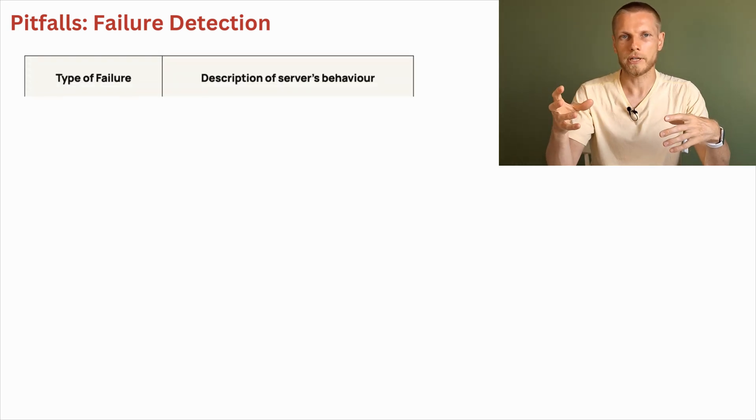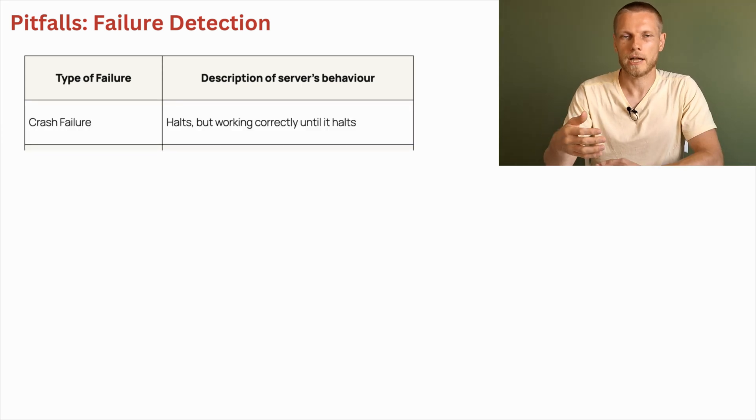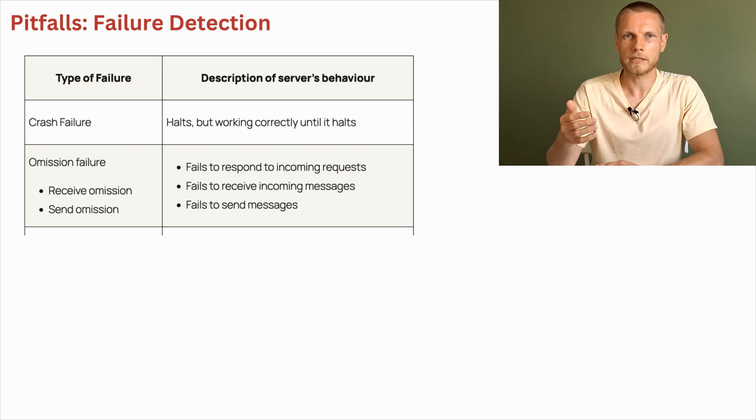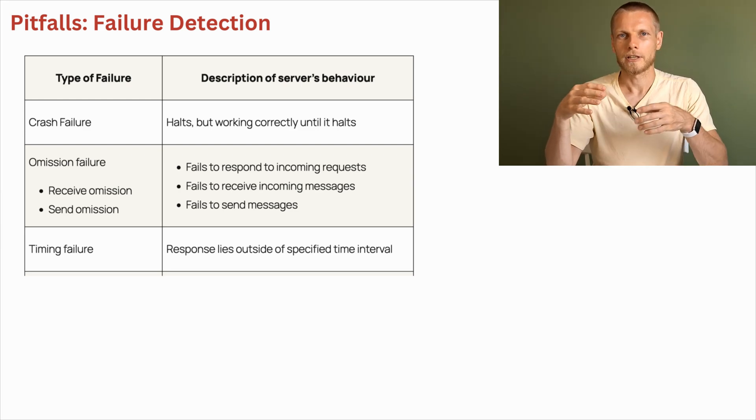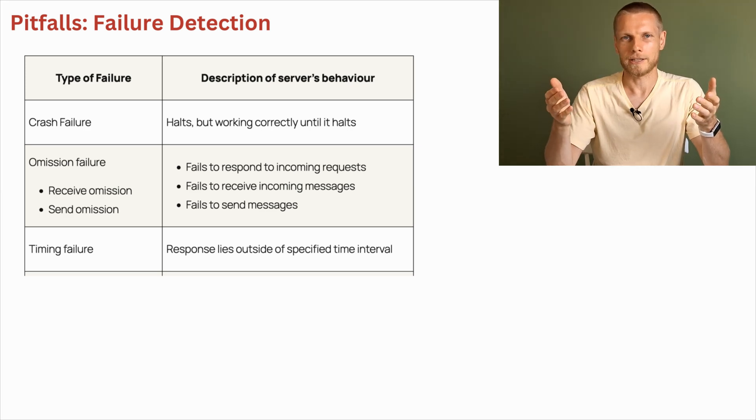We can classify all types of failures into several categories. Crash failure happens when leader worked properly and then suddenly stopped working. But before it stopped, it worked without any problems and behaved in an expected way. Omission failure is when server is up and running, but it can't receive or send messages. So it effectively seems like it's down, but it's really not. Next level of failure is timing failure. In this type, server is up and running. It can receive and respond on the messages, but it's just doing it so slowly that those responses are out of time.